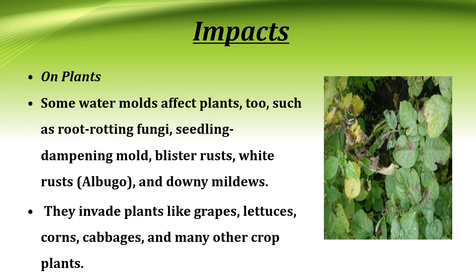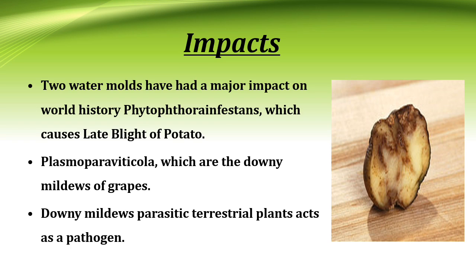Impacts on plants: some water molds affect plants too, such as root-rotting fungi, seedling damping, blister rust, white rust, and downy mildew. They invade plants like grapes, lotus, corn, cabbage, and many other crop plants. Two water molds have had a major impact on world history: one causes late blight of potato and another causes downy mildew of grapes. Parasitic terrestrial plant oomycetes act as pathogens.